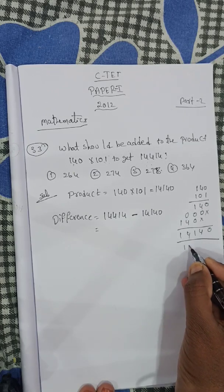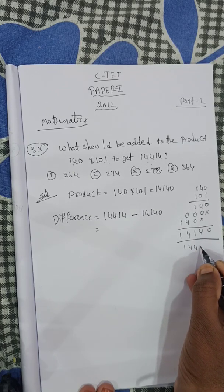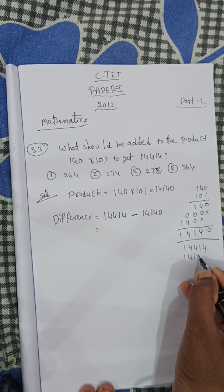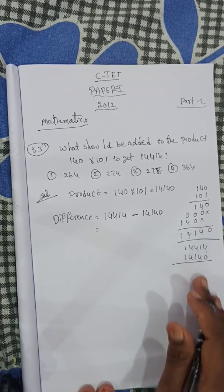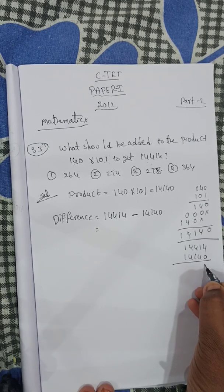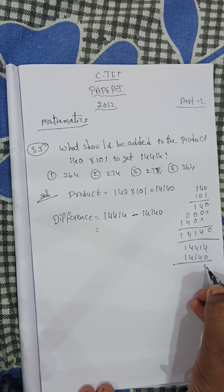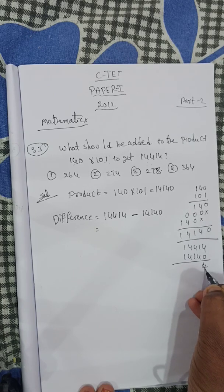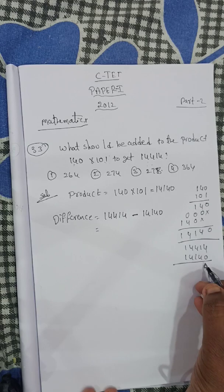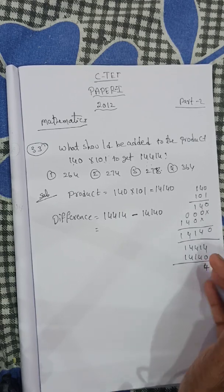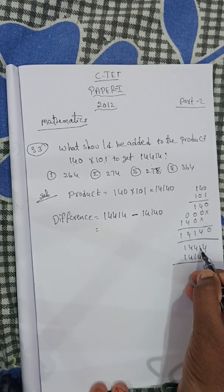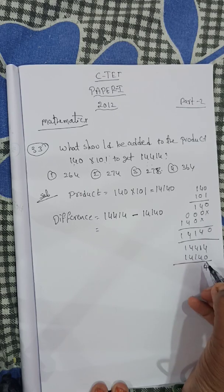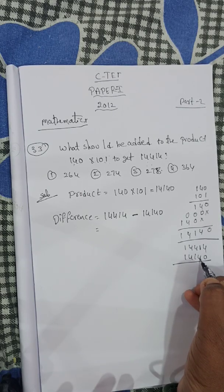Now: 14414 minus 14140. Here, 1 is the smallest number and 4 is the biggest number. Performing the subtraction gives us the answer.